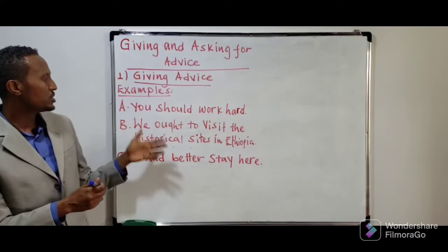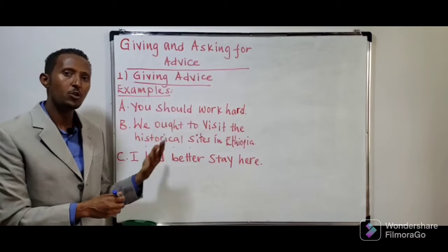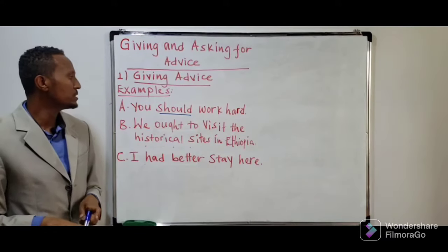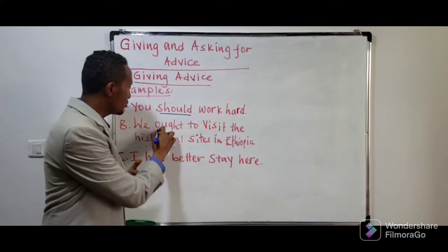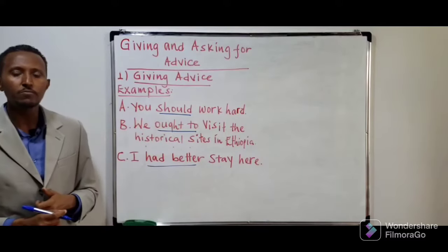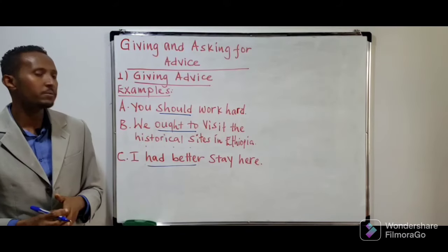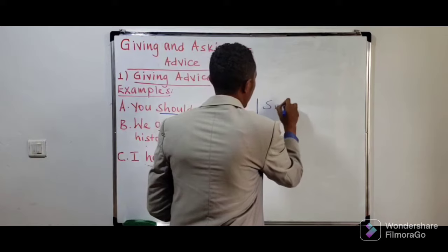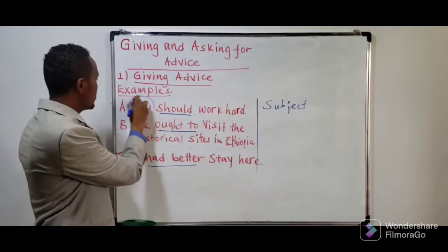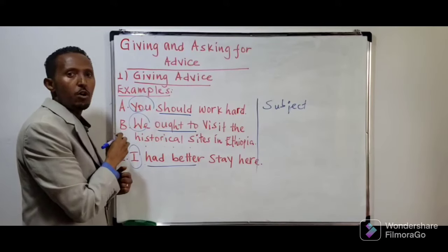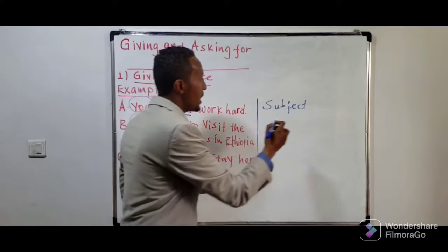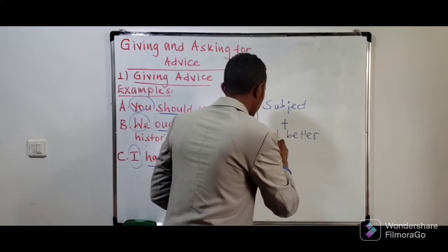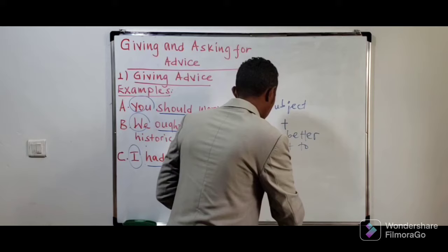Now let me show you the expressions. The expressions could be in fact a word, phrase, or clause. Here we have 'should' — because of 'should' we consider the sentence to be giving advice. We have 'ought to' and we have 'had better.' These three words enable us to give advice to others. So we have the subject first — 'you,' 'we,' 'I' — at the beginning, and then we have 'had better,' 'ought to,' and 'should.'